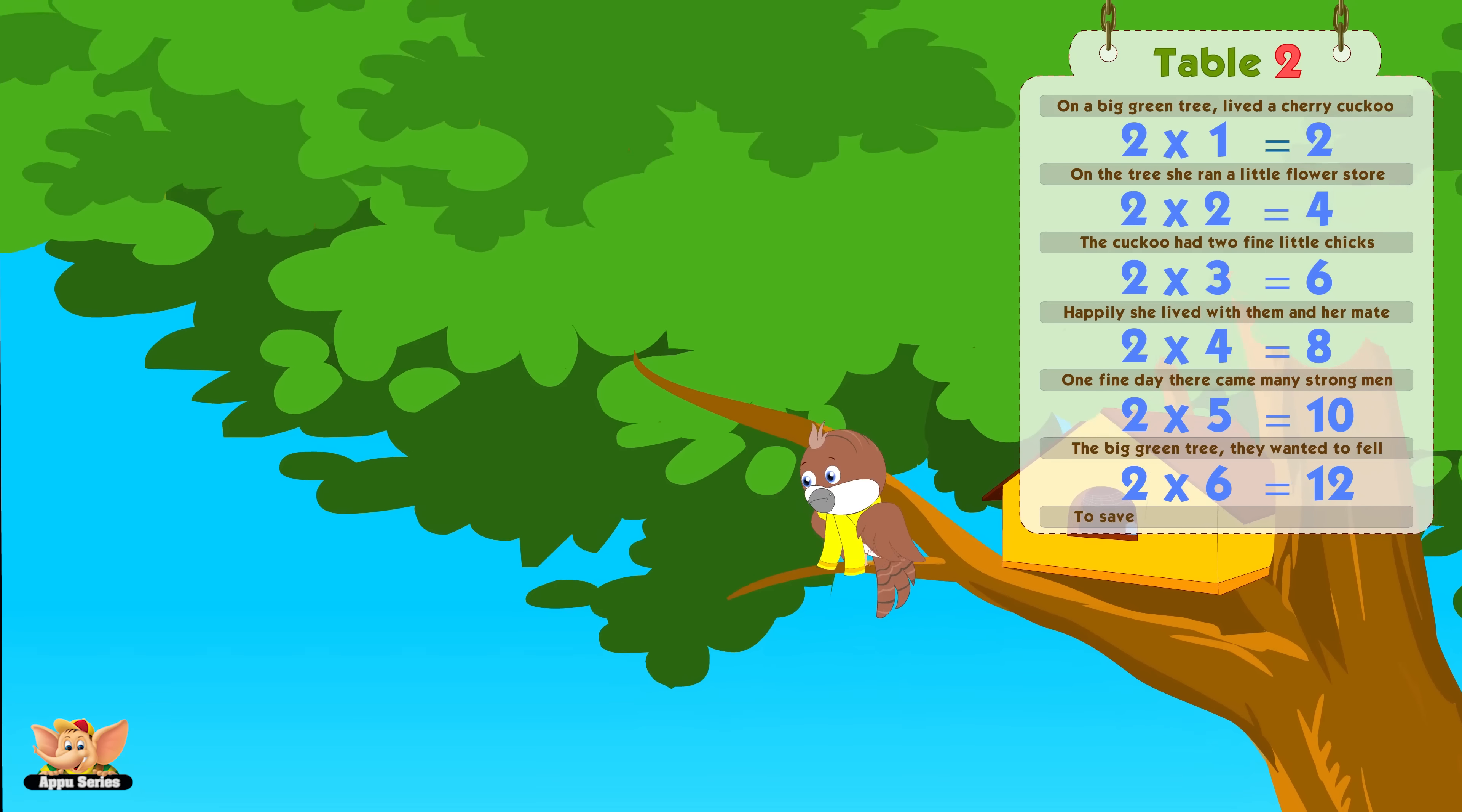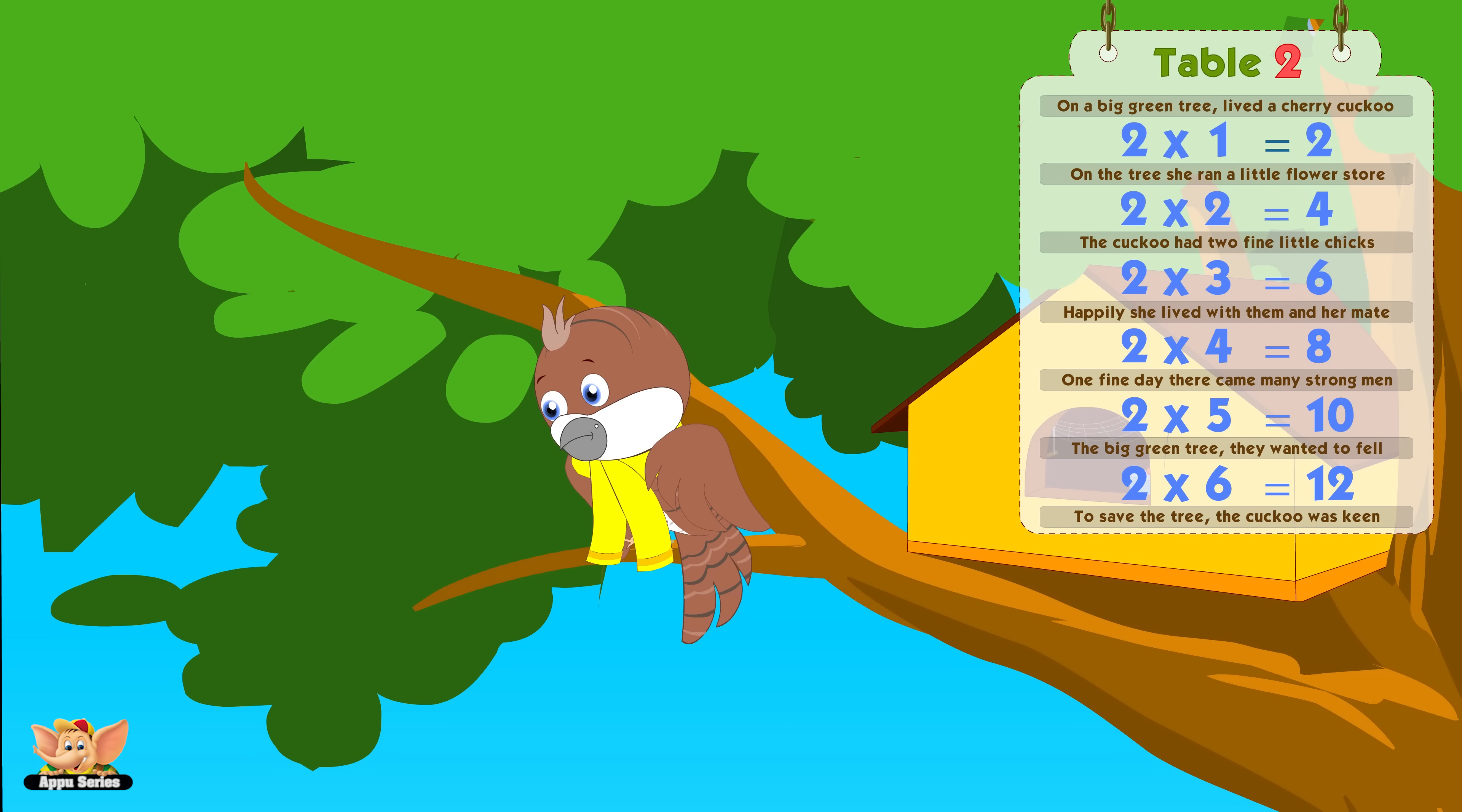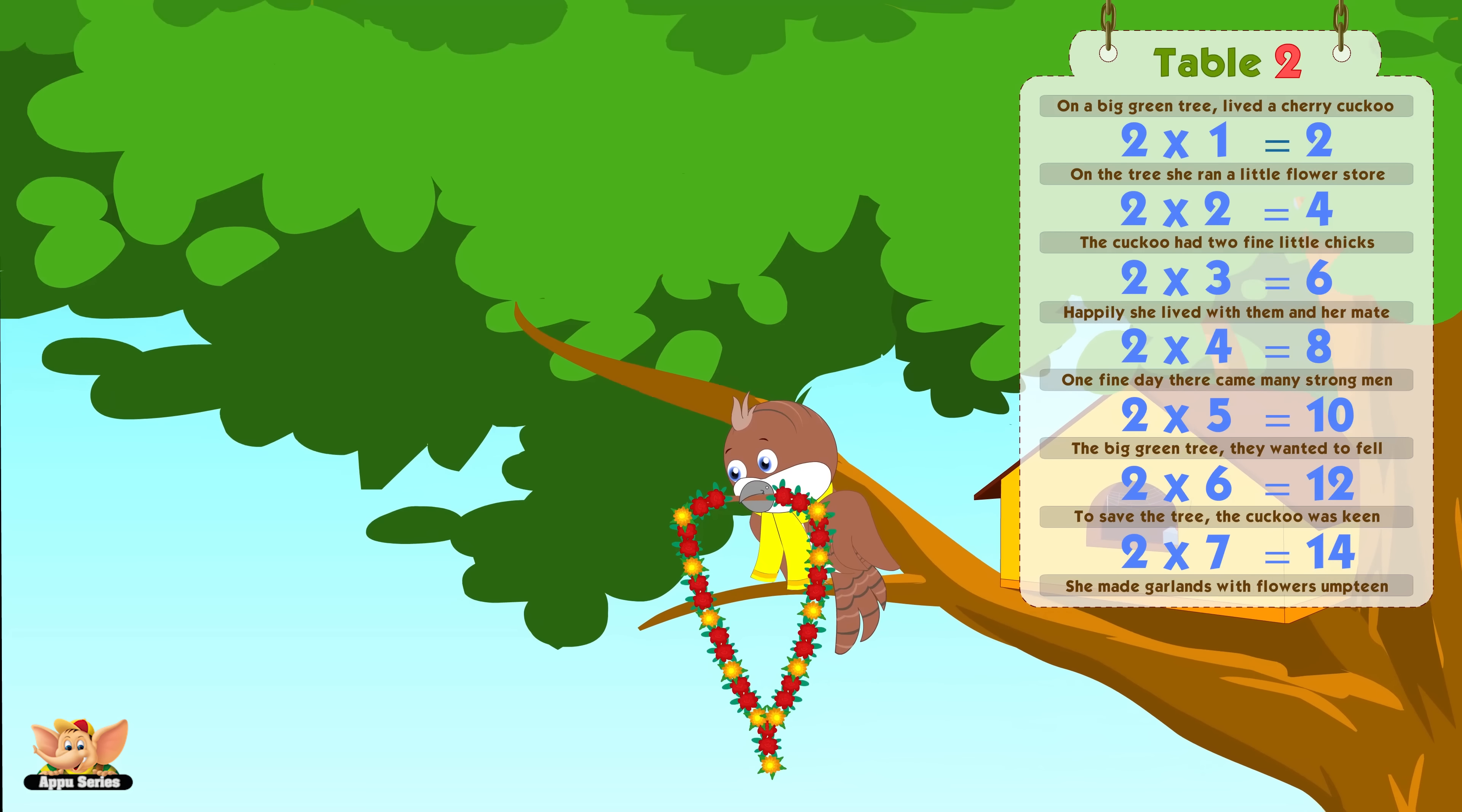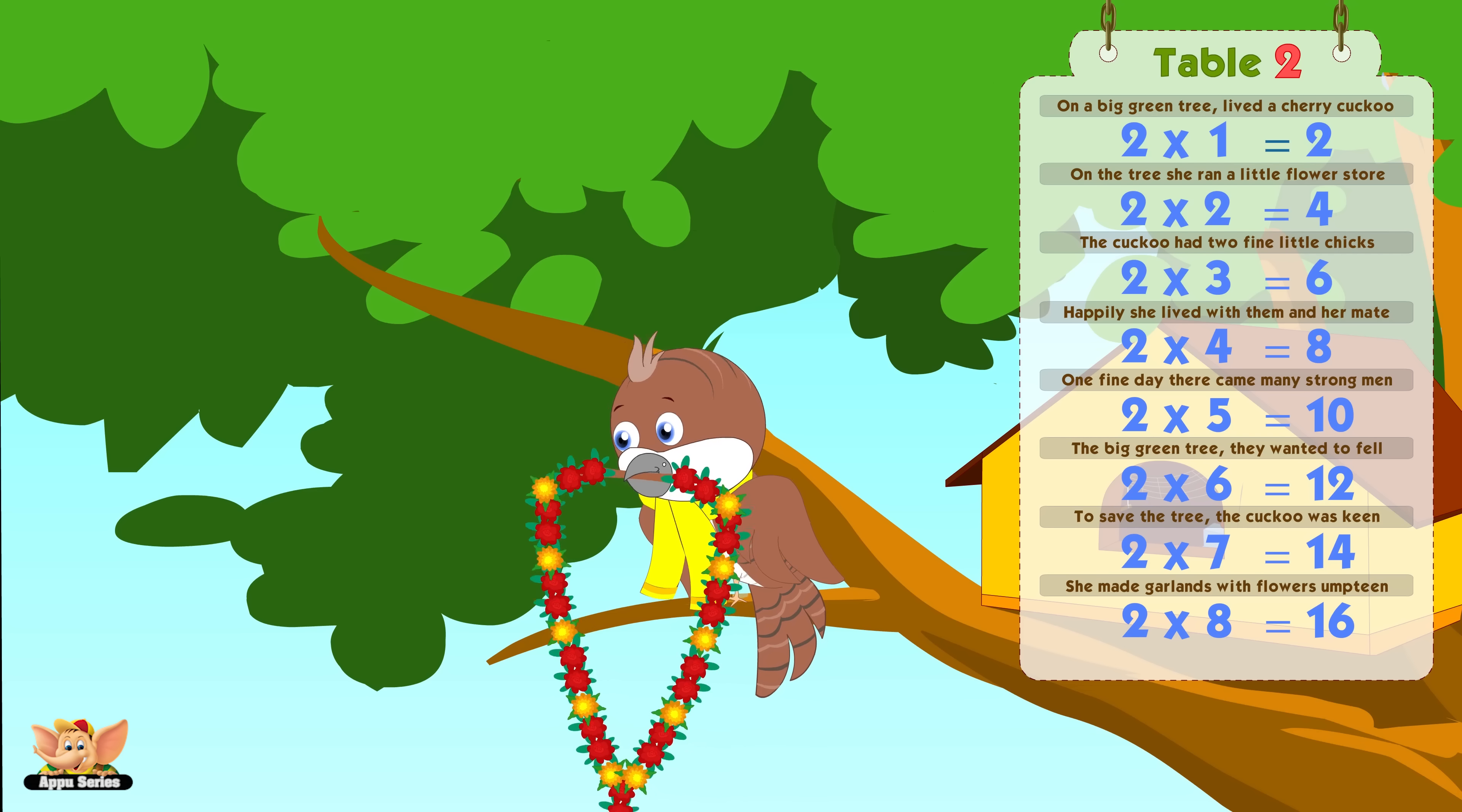To save the tree the cuckoo was keen. Two sevens are number fourteen. She made garlands with flowers umpteen. Two eights are number sixteen.